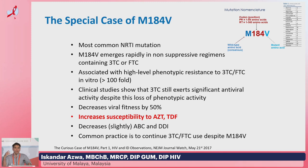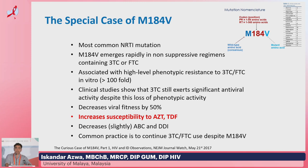But there is this special case of M184V. It's the most common NRTI mutation — it emerges very rapidly in non-suppressive regimens containing 3TC or FTC. On resistance testing it is associated with very high-level phenotypic resistance of more than a hundredfold, but clinical studies show that if you continue to use 3TC it is okay, because it continues to exert significant antiviral activity despite the loss of phenotypic activity, and is associated with a reduction in viral fitness by at least 50%.